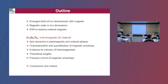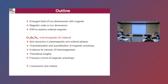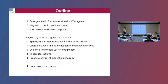I will present evidence on the spin dynamics in the paramagnetic and ordered states, and how we can very accurately characterize and quantify the magnetic anisotropy and provide evidence for intrinsic two-dimensional ferromagnetism of this material, and how this relates to theoretical predictions. Finally, I will show that one can control and tune this magnetic anisotropy by applying hydrostatic pressure. I will end with some conclusions and a possible outlook.